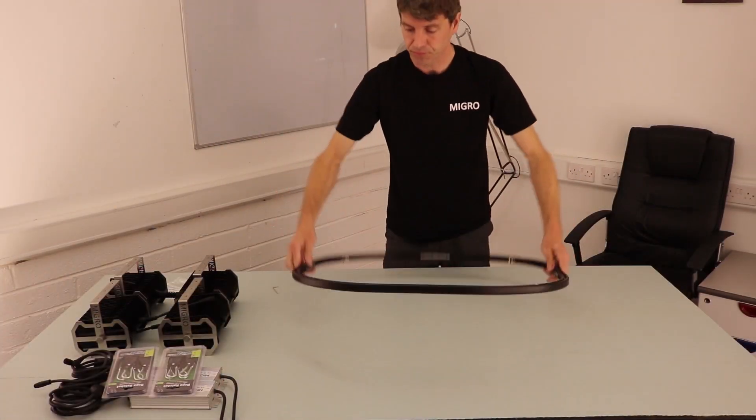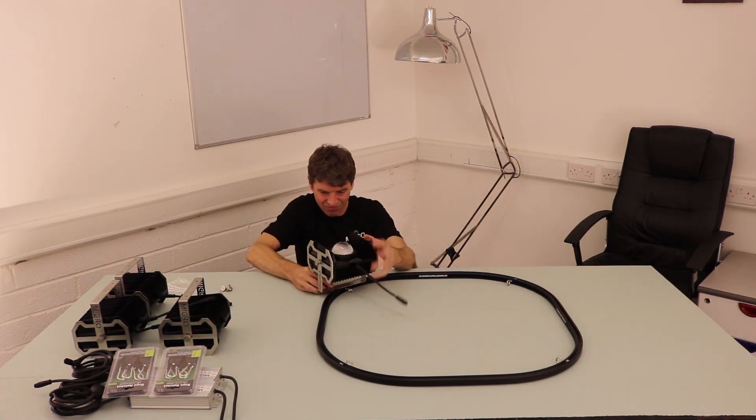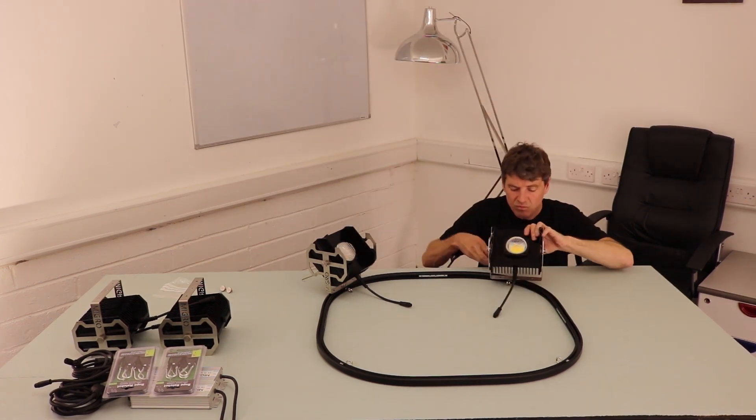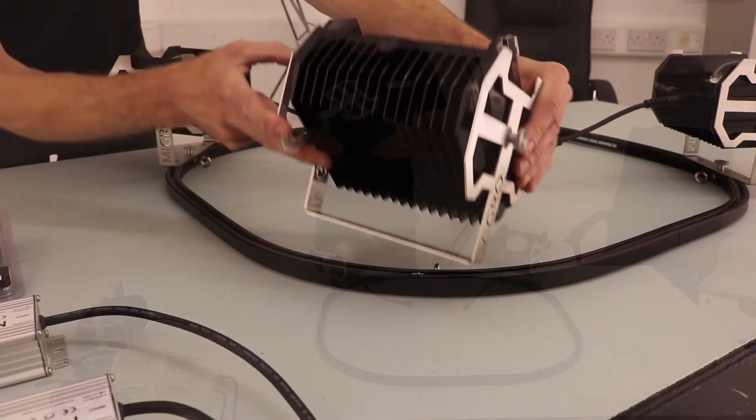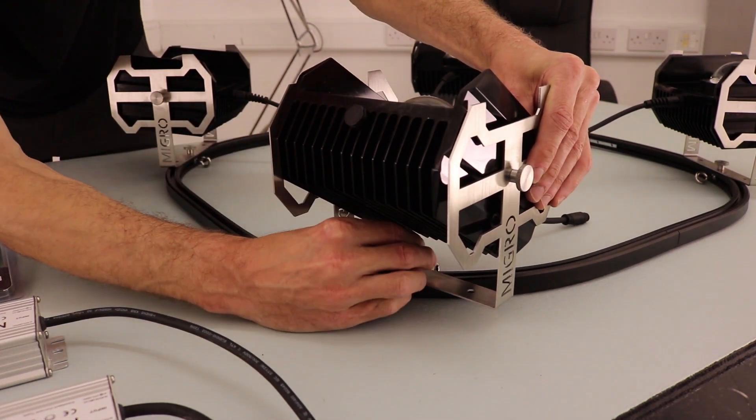Now that we have completed our circular frame, we turn it over and we can attach each of the LED grow lights onto the hanging frame. They are connected to the aluminum hanging frame using a stainless steel grub screw.